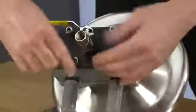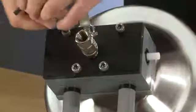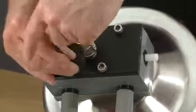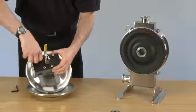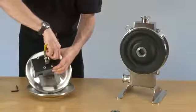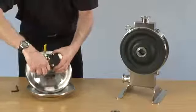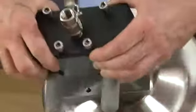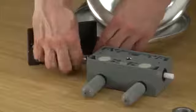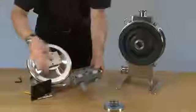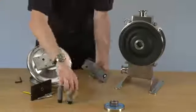First of all, we're going to undo four socket heads holding the air valve on and remove this. Now we can replace this unit with a new one and use silencers. Screw the silencers in.